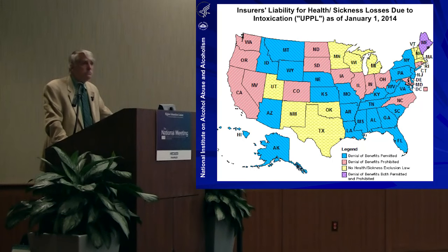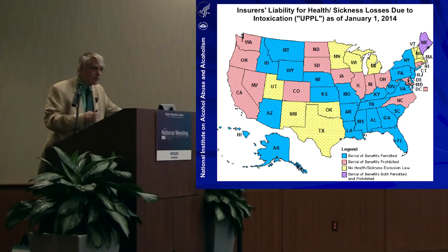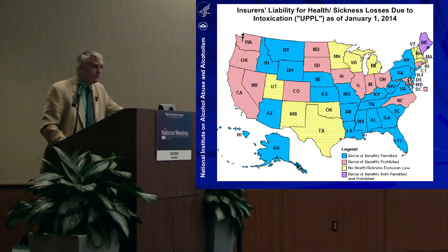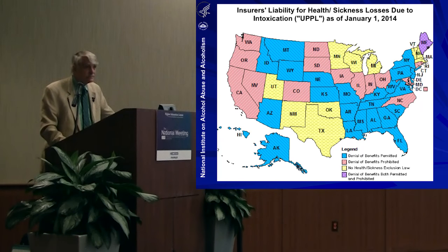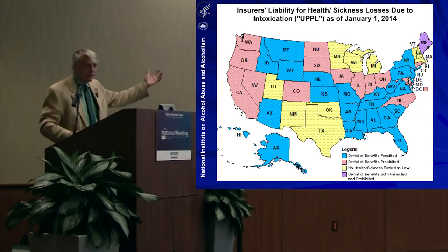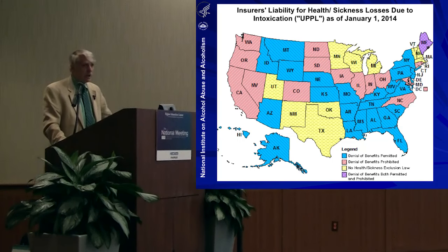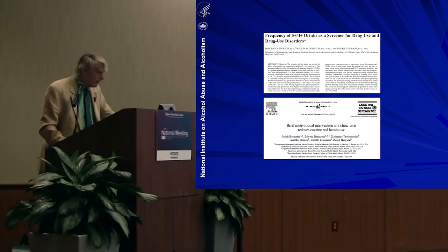In states shown in blue, there are laws on the books that allow insurance companies to withhold reimbursement for medical treatment of people injured under the influence of alcohol or drugs. That's a terrible disincentive for providers to find out why these people are coming in. States shown in pink have recently repealed those laws. An important research question is whether those states now show a greater proportion of young people being screened and counseled about their alcohol and drug use.